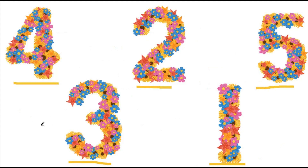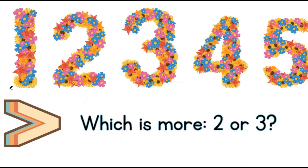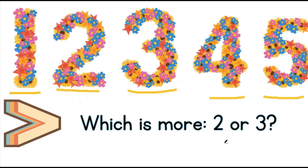Now, let's put these five numbers into order from the smallest to the biggest. 1 is the smallest, 2 is the second smallest, 3 is the third smallest, 4 is the fourth smallest, and 5 is the fifth smallest.